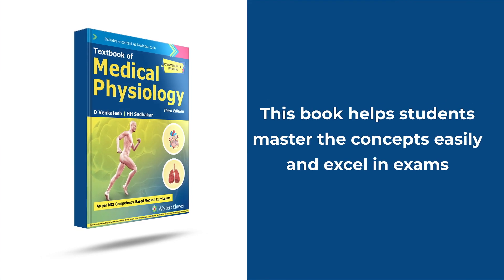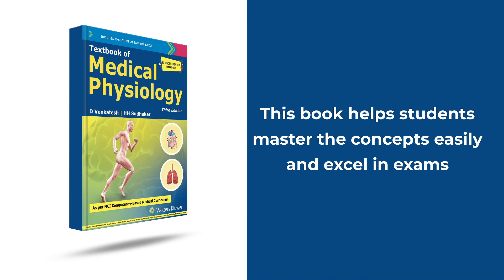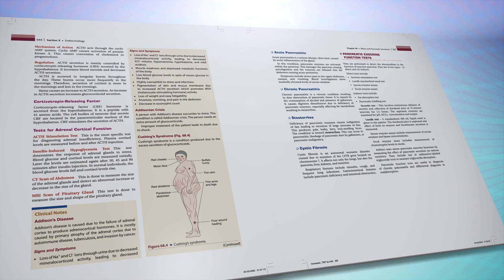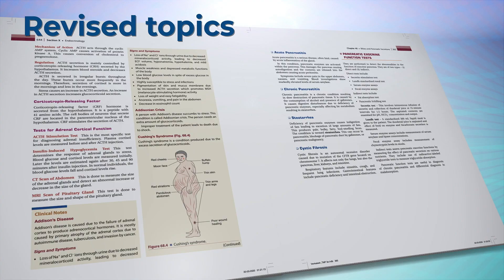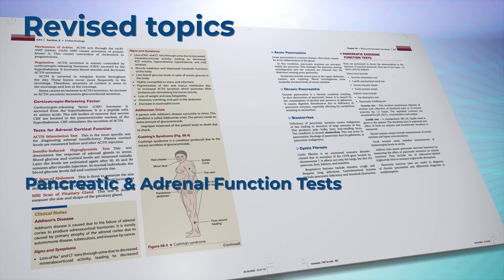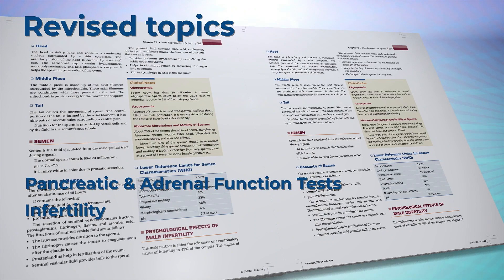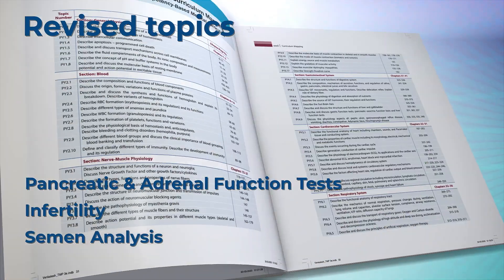The unique approach of this book helps students master the concepts easily and excel in exams. The changes in the new edition include thoroughly revised topics such as pancreatic and adrenal function tests, infertility, and semen analysis based on competency-based undergraduate curriculum.